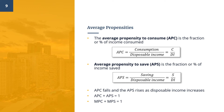Besides the marginal propensities to consume or save, another important concept is the average propensities. The Average Propensity to Consume, or APC, tells us how much of income was spent, while the Average Propensity to Save, or APS, tells us how much was saved at each level of disposable income. To find the APC or APS, we divide total consumption or total saving by total disposable income. Since disposable income is either consumed or saved, APC plus APS must equal one. Similarly, MPC plus MPS must also equal one.